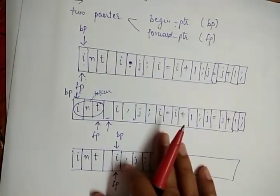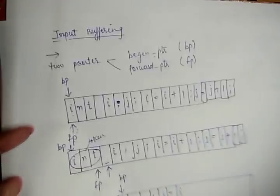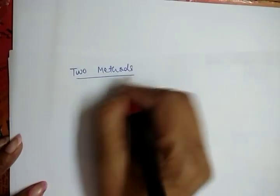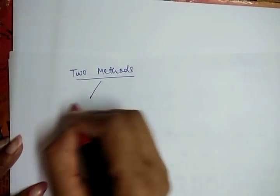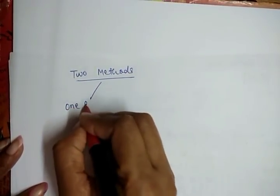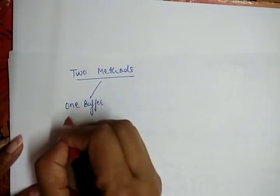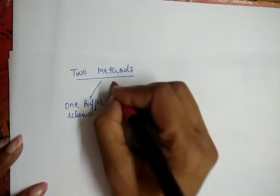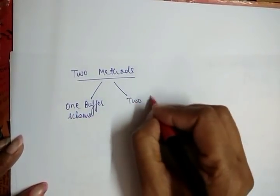There is one more concept in input buffering: there are two methods used in this context. One is the one buffer scheme and the other is the two buffer scheme.